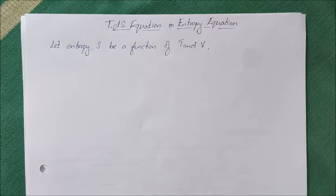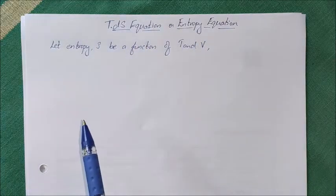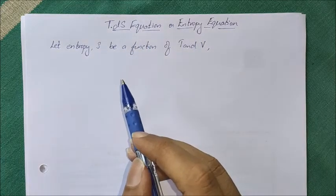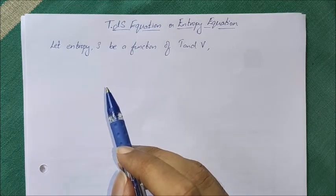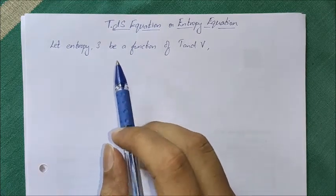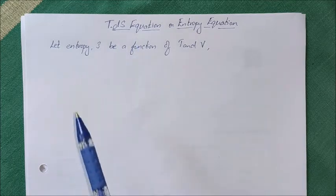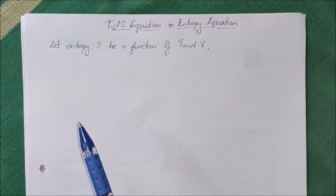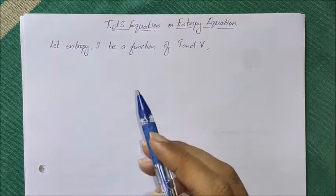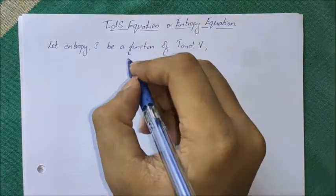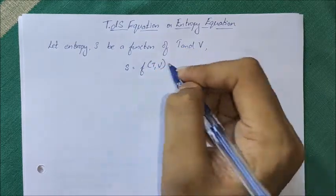Today we are going to learn about the TDS equation, also known as the entropy equation. This equation is very important when studying thermodynamic relations. To derive this entropy equation, let entropy S be a function of T and V, so S is equal to F of T comma V.